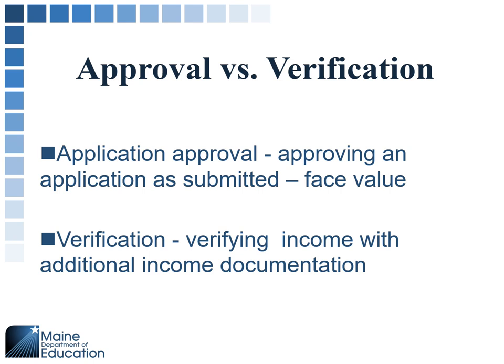There are two processes with the applications. One is the approval process — you get the applications, you accept them, and you approve them based on face value. Then the verification process is where you're verifying what they put on that application, which gave them either the free or reduced price benefit. Any denied applications are not subject to the verification process.